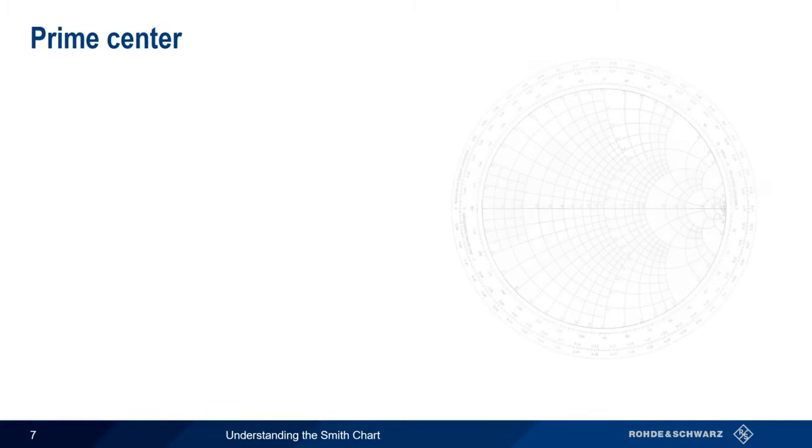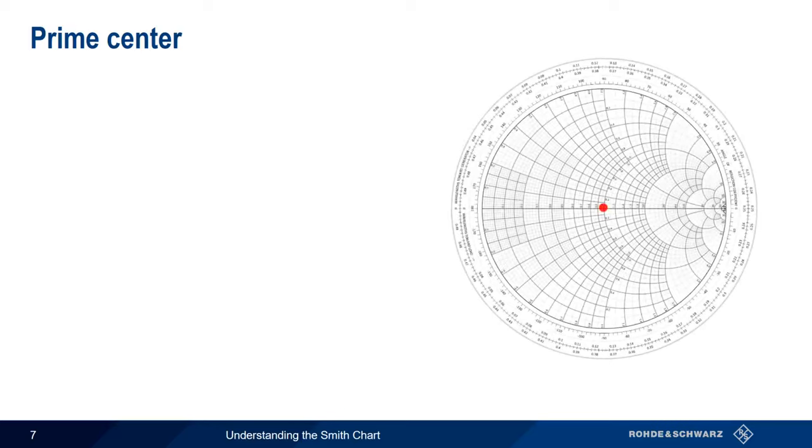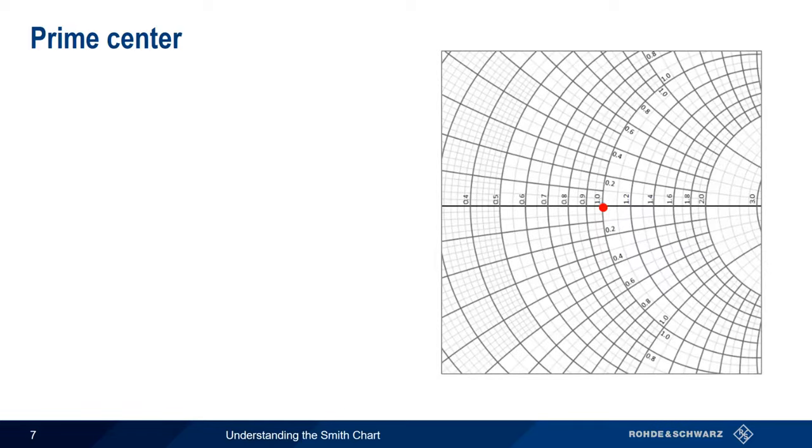We'll start our tour of the Smith Chart by looking at the point directly in the middle of the chart. Let's zoom in a little bit. This point is often called the prime center and corresponds to our source impedance, Z sub zero.